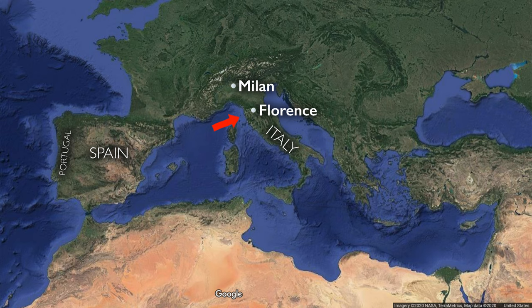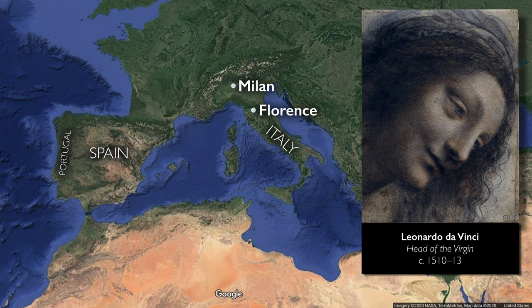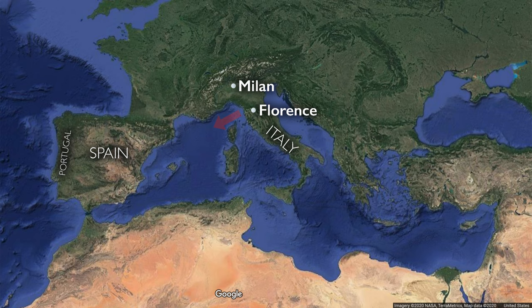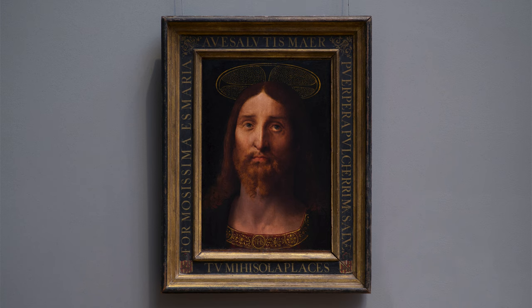We know that he spent time in Italy, in Florence, working with Leonardo da Vinci. He may have even followed Leonardo to northern Italy when Leonardo moved from Florence to Milan. While him going north with Leonardo is speculative, we do know that he was working with Leonardo and that he then returns to Spain in the year 1506.